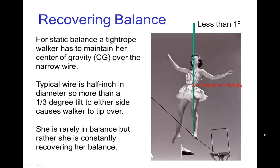Recovering balance. In some of the earlier tutorials, we've talked about how to judge whether a character is in balance or not. But in this tutorial, we'll see how characters tend to recover balance. A good example to start with is a character on a tightrope. To maintain static balance, the tightrope walker has to keep her center of gravity over the wire, but typically that's rather difficult because the wire is quite narrow. So often the tightrope walker is constantly shifting poses in order to recover balance.